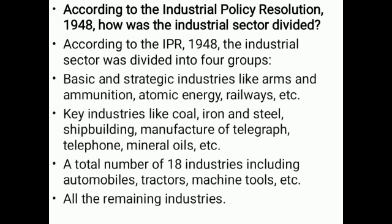The IPR of 1948 divided the industrial sector into four groups. First, basic and strategic industries such as arms and ammunition. Second, key industries like coal, iron and steel, shipbuilding, manufacture of telegraph, telephone, and mineral oils. Third, a total of 18 industries including automobiles, tractors, and machine tools. And fourth, all the remaining industries. So if you have questions in the exam, remember there are 4 groups.